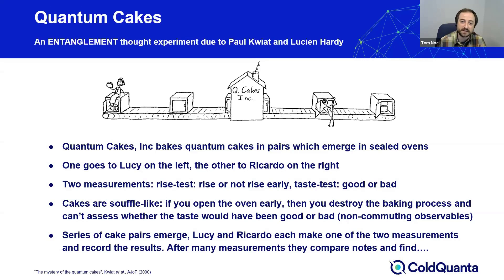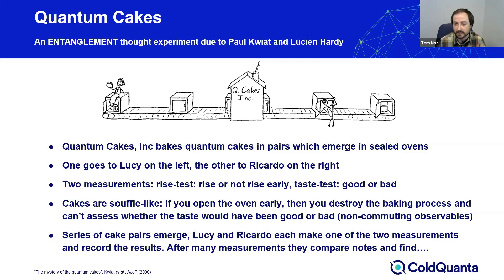Quantum Cakes Inc. bakes quantum cakes in pairs, and pairs of cakes emerge in sealed ovens. One cake goes to Lucy on the left and the other to Ricardo on the right. Lucy and Ricardo can make two different measurements: a rise test — looking mid-bake to see if the cake has risen early — or a taste test, waiting until the cake is fully baked and tasting it. The cakes are soufflé-like: if you open the oven early, you destroy the baking process and can't properly assess whether the taste would have been good or bad. This setup introduces the idea of non-commuting observables.